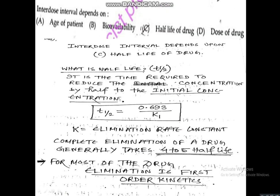The next question asks: interdose interval depends upon — age of patient, bioavailability, half-life of drug, or dose of the drug? The correct answer is half-life of the drug. Half-life (T½) is the time required to reduce the concentration to half its initial value. The formula is T½ = 0.693/K, where K is the elimination rate constant. Complete elimination generally takes four to five half-lives, and for most drugs, elimination follows first-order kinetics.